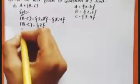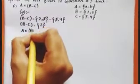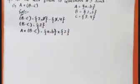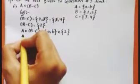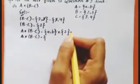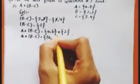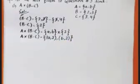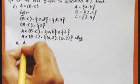So B minus C is solved. Now we find A cross (B minus C). In the Cartesian product, we take the first member of set A and pair it with each member of B minus C. We get A cross (B minus C) as our answer for question number 2 part 1.